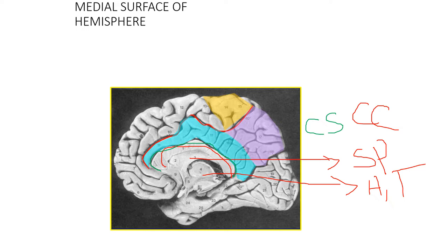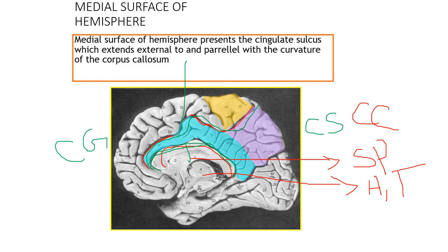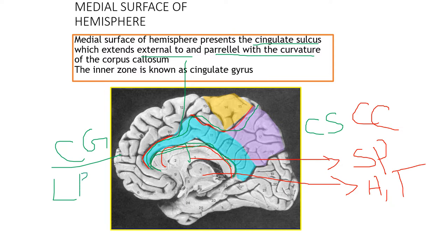In line with and above the callosal sulcus, you can see the cingulate sulcus. So this is the callosal sulcus and this is the cingulate sulcus. In between these two sulci, you have the cingulate gyrus — that is the first gyrus on this surface. The cingulate sulcus extends parallel with the curvature of the corpus callosum, and the cingulate gyrus belongs to the limbic lobe or limbic system.